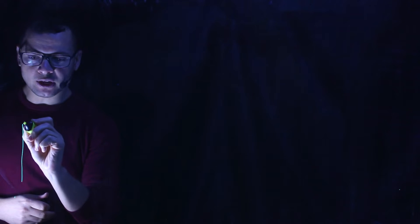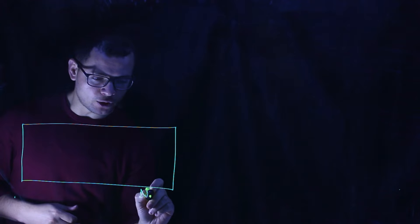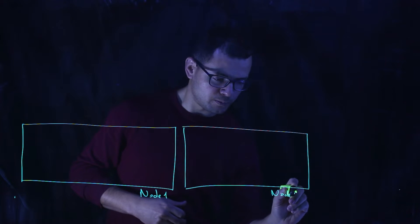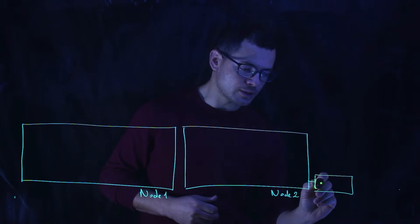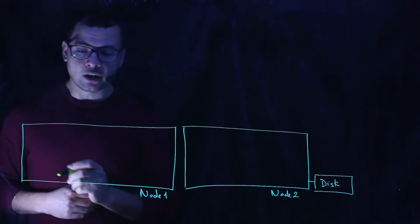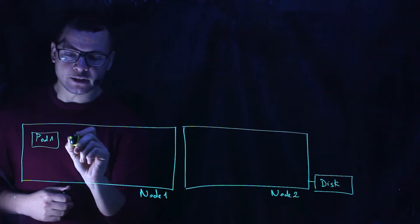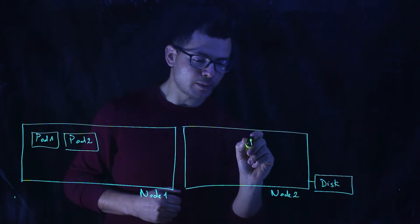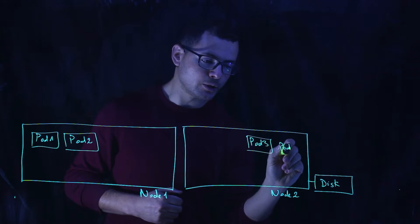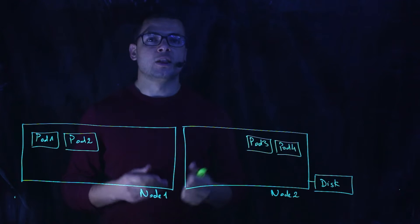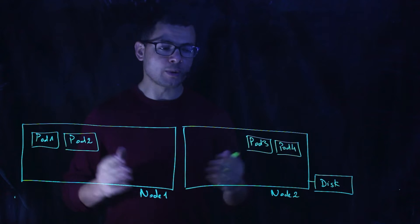In a typical Kubernetes cluster, we have multiple nodes running. We might have node number one, node number two, and those nodes might connect to a certain disk space. Inside those nodes, we have our pods running. In node one, I might have pod number one and a second pod. Those pods run my application inside the node. In node two, maybe I have pod number three and pod number four, and so on. It's important to monitor the cluster to understand memory consumption, CPU usage, and network usage.